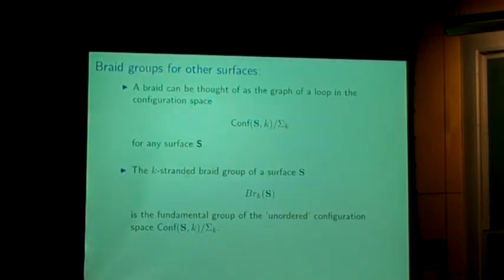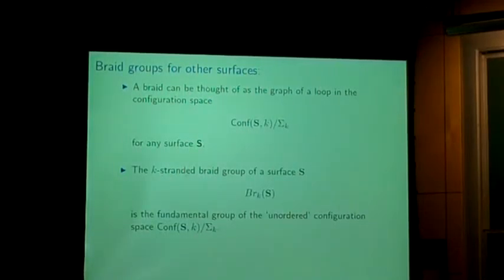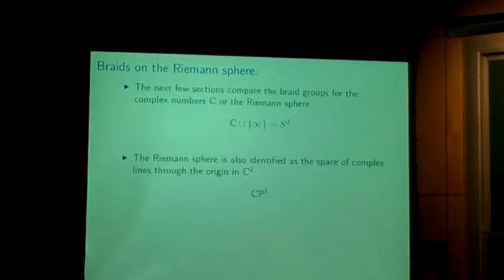The fundamental groups of the unordered configuration space basically consist of particles on the surface moving through time, up to isotopy — that is, tightening up the strands a little bit. So the braid group is really the fundamental group of the unordered configuration space. I'd like to illustrate this a little bit with some pictures. The fundamental comparison is something you could have considered in high school — comparing the complex numbers to the two-sphere, the Riemann sphere.